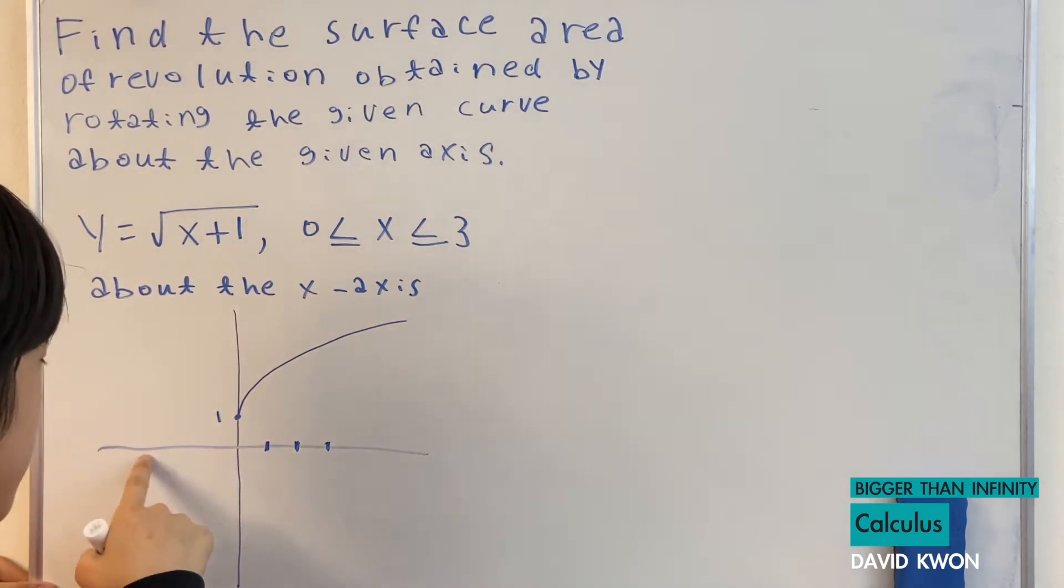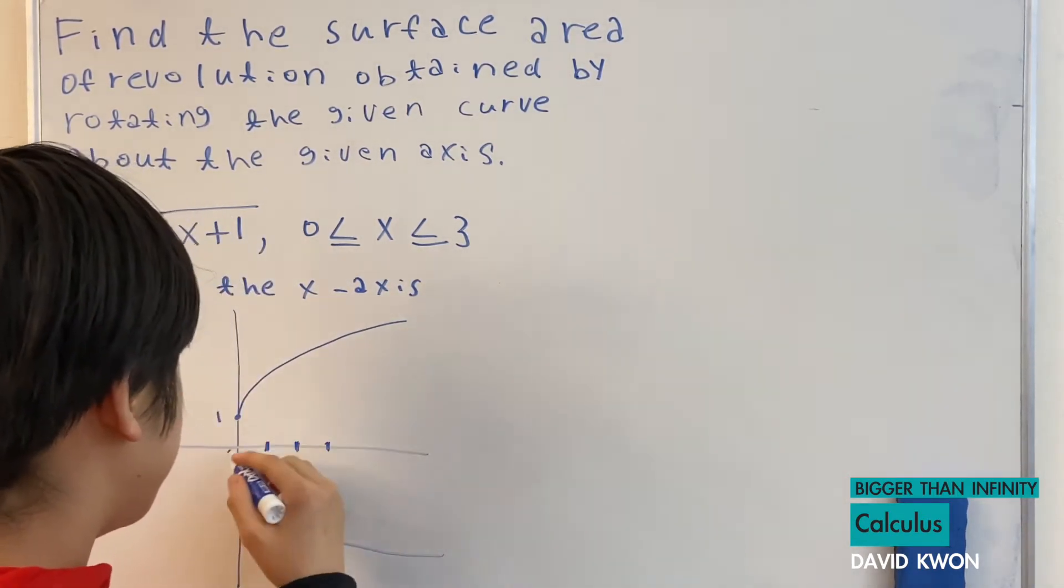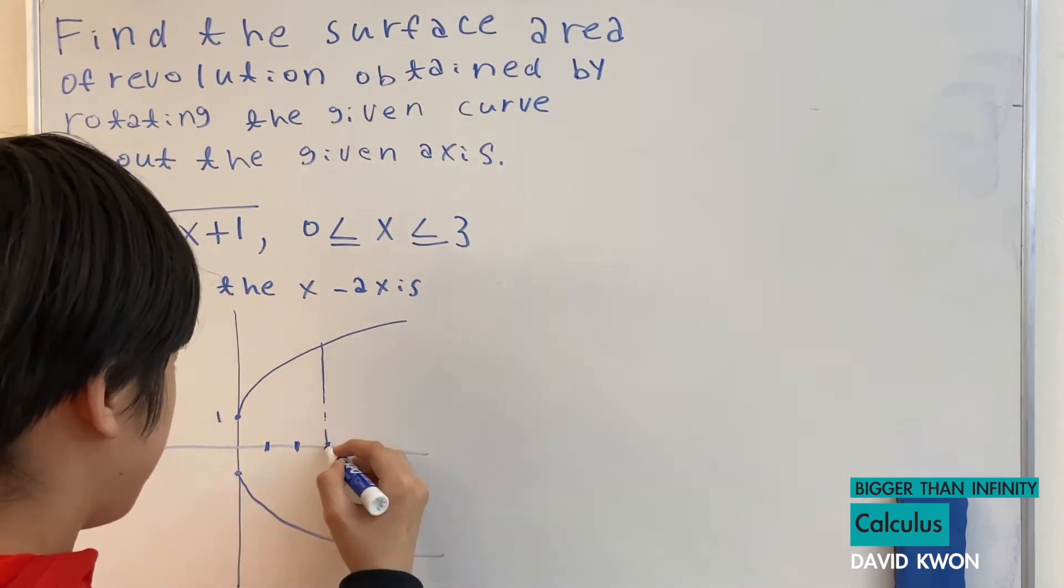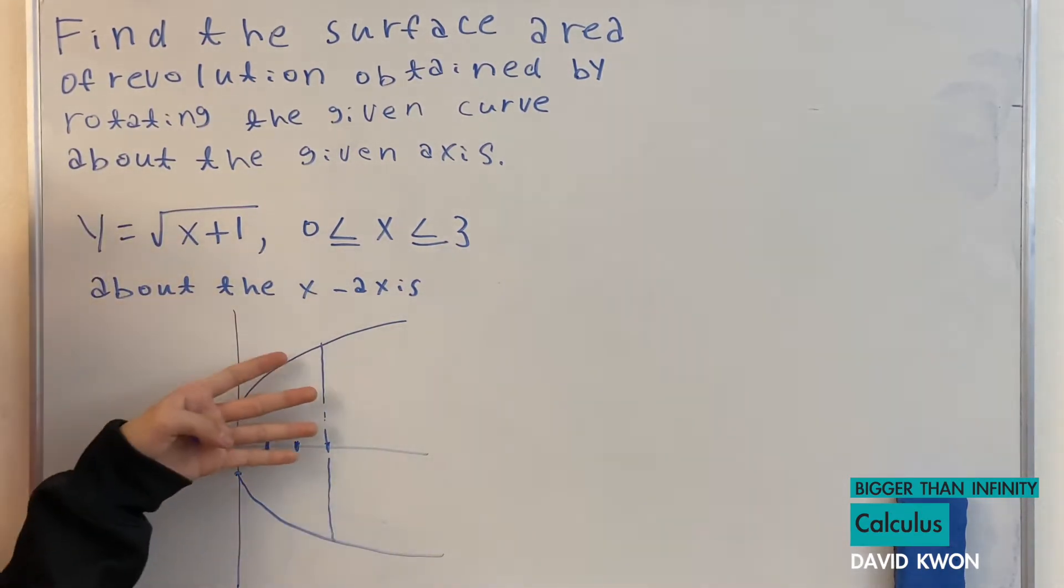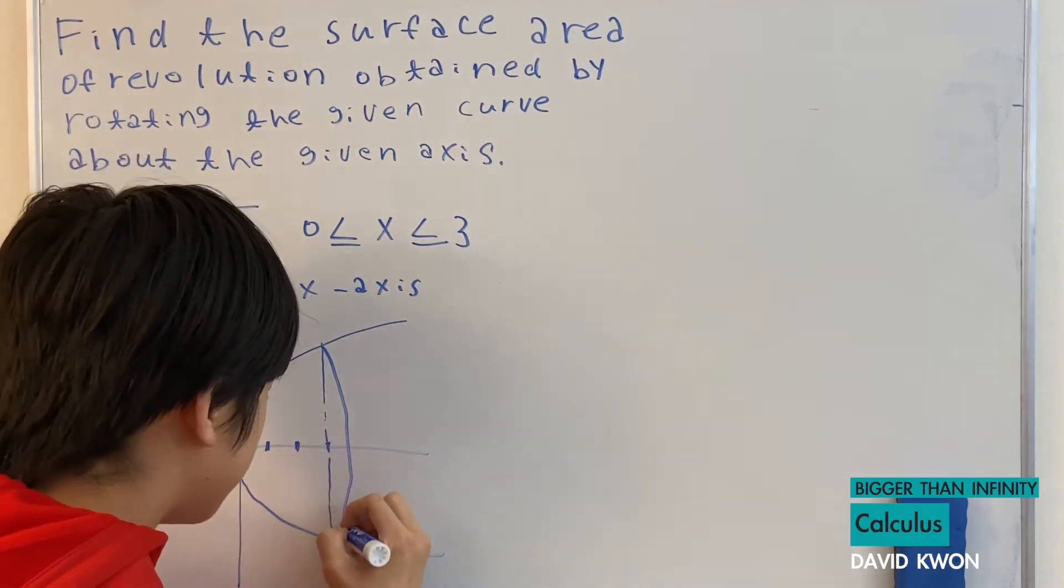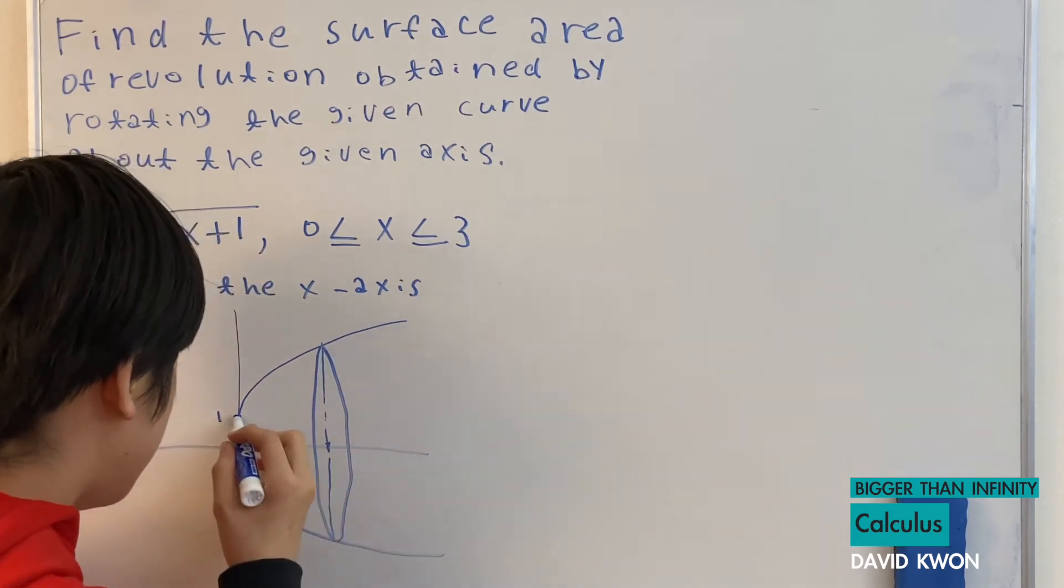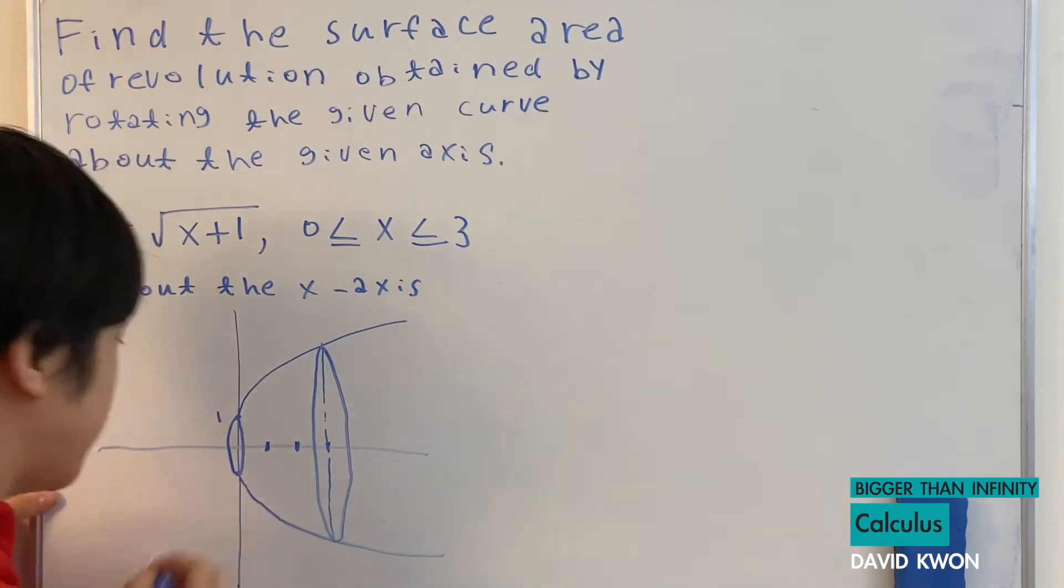So I will mirror image this across the x-axis from 0 to 3. So when this thing spins around the x-axis, it will create a giant circular base and a circular thing on the top as well.